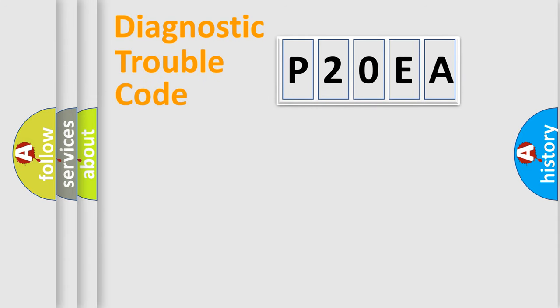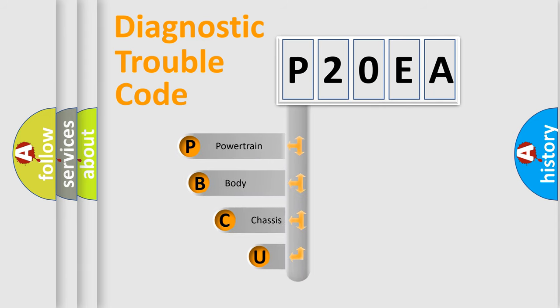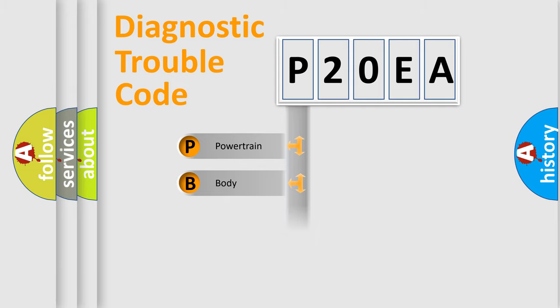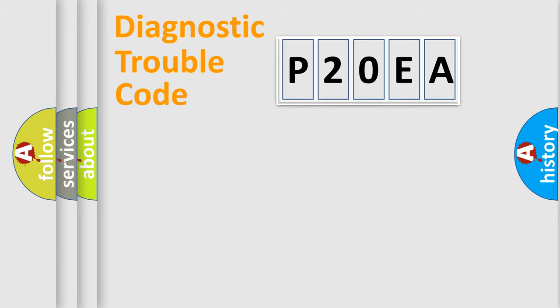Let's look at the history of diagnostic fault code composition according to the OBD2 protocol, which is unified for all automakers since 2000. We divide the electric system of automobile into four basic units: Powertrain, Body, Chassis, and Network. This distribution is defined in the first character of the code.